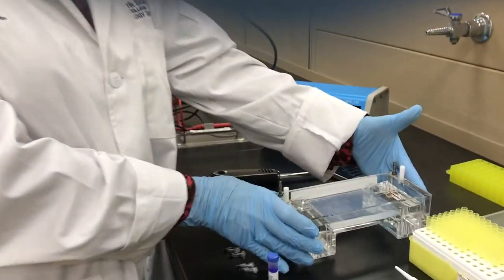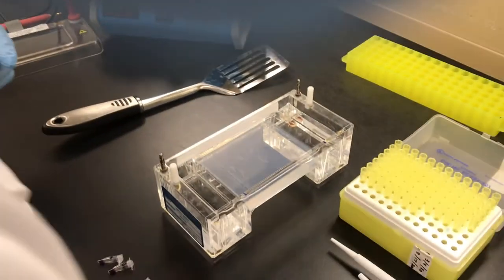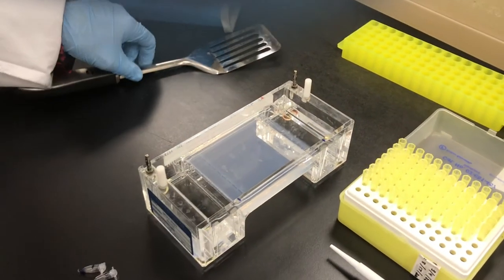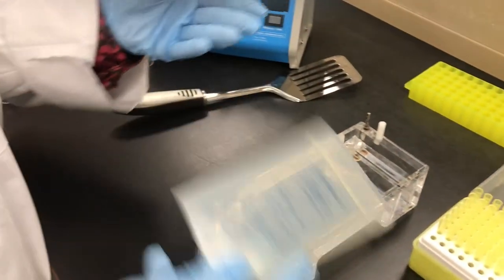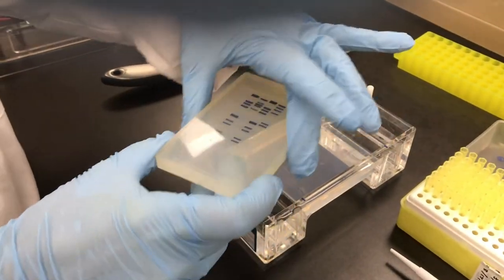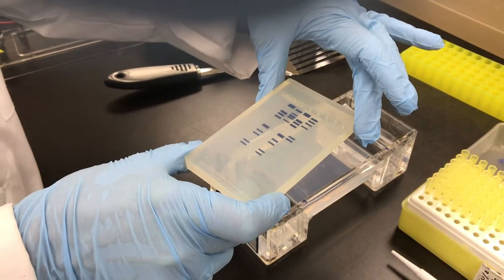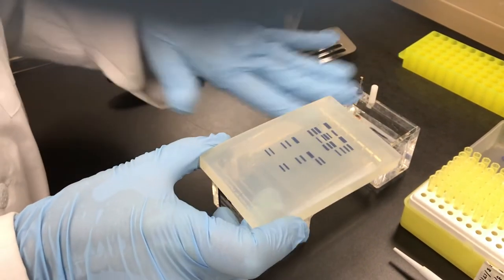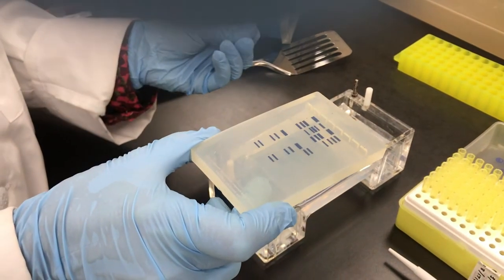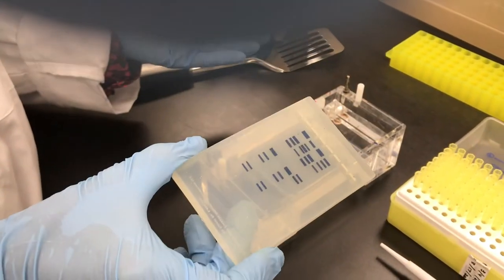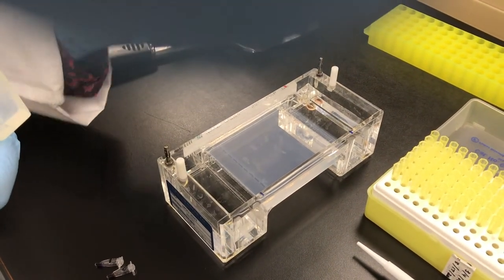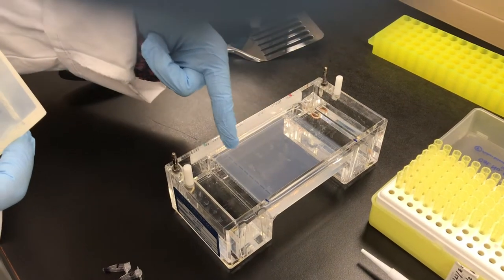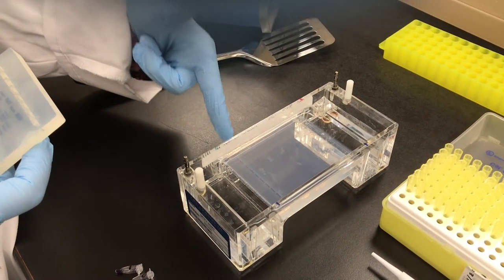So this is our gel box. We have an agarose gel in there that was poured and cooled. It's like agar, but agarose is more refined. We have a buffered solution, put the agarose powder in, heat it up, get it all dissolved. When it cools down, we pour it into the container, and we have a form we put in called a gel comb that creates the wells.